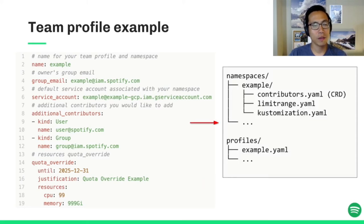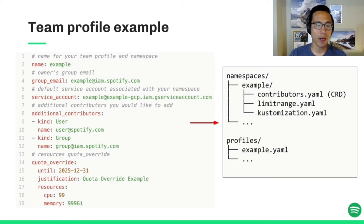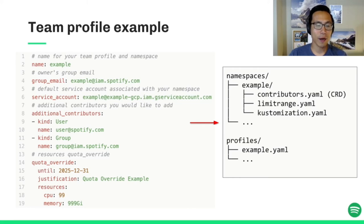After team configuration is defined, our tool automatically converts it into a set of Kubernetes resource files. As you can see on the right side, it has a Kubeflow Profile YAML and an example namespace folder. In that namespace folder there are CRD resource files that define RBAC and IAM rules for team members and contributors. Our controller will pick it up and set permissions accordingly after it's deployed. It also has a limit range file that defines the default resource request and limit for containers running in that namespace. A customization file assembles different resource manifests needed for the namespace so they can be deployed all together.